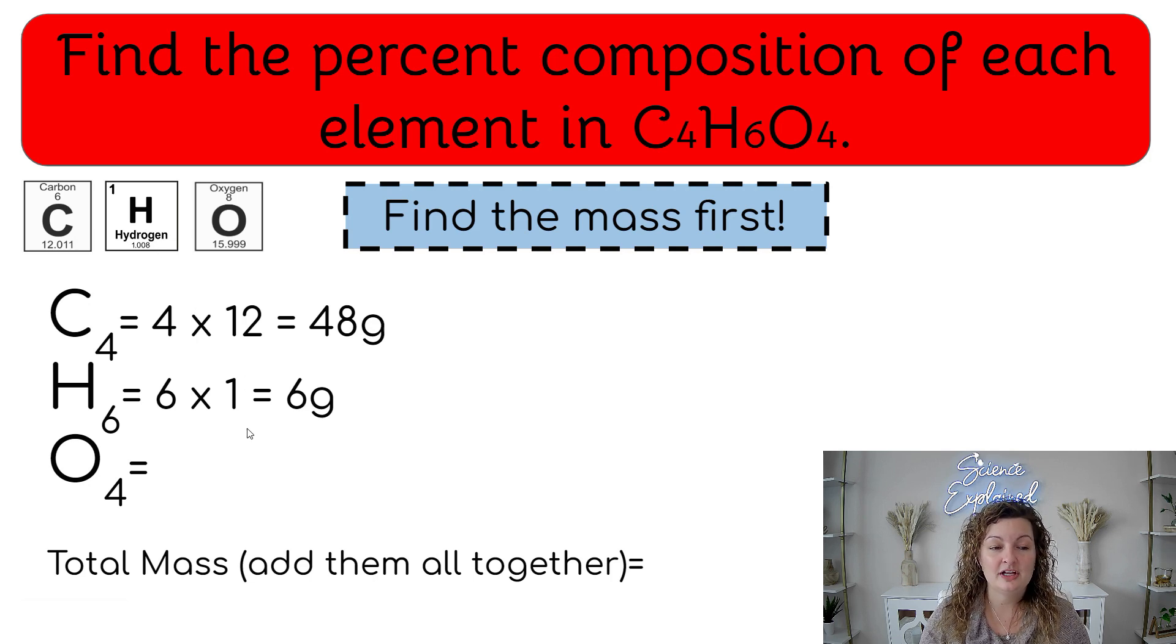And you're going to get six grams. And then four times the 16 on the periodic table, and you get 64 grams. In order to find the mass of the entire compound, or the molar mass, you're now going to add up these numbers. And you end up getting 118 grams.